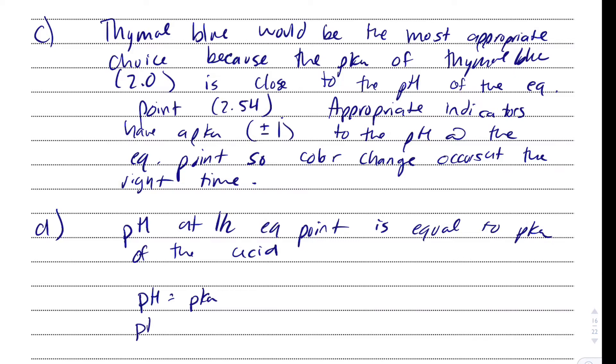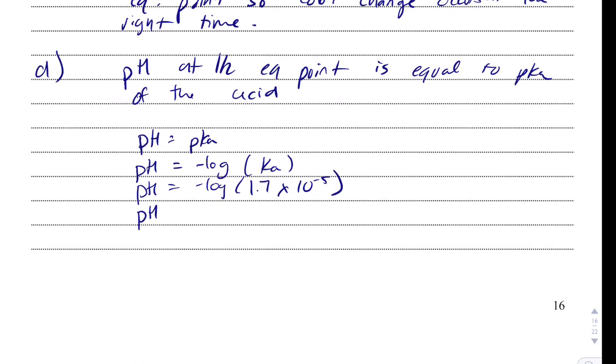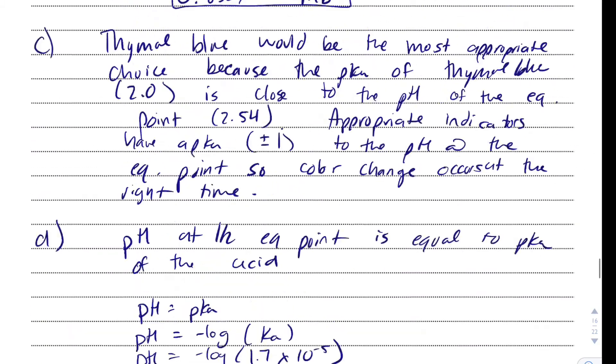So using the Henderson-Hasselbalch equation, the log of the numerator and denominator, that fraction ends up being 1, so the log of 1 ends up being 0. But I would just say pH equals pKa. The pH equals minus log of the Ka. And so the Ka that they gave us was 1.7 times 10 to the minus 5. So we're going to get a 4 point something for the pH, and we get 4.76.